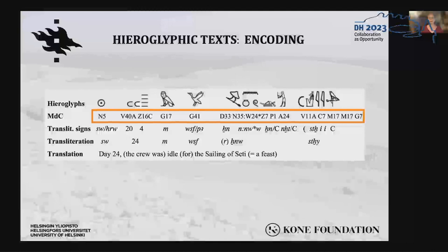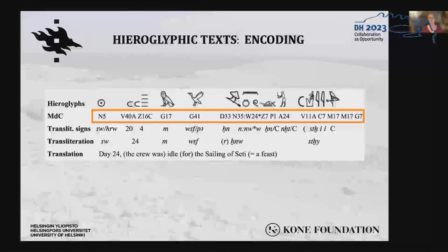This encoding represents the signs better than the transliteration, which in Egyptology is already an interpretation of the words. From the hieroglyphic text editors, one exports the hieroglyphic text as a picture, while the encoding is saved in files with the extension GLI.